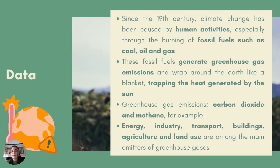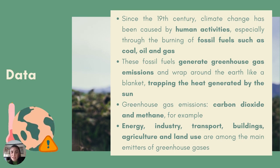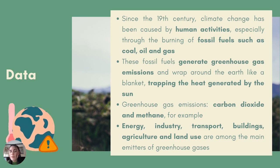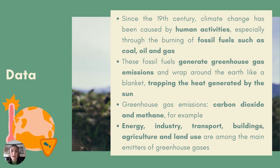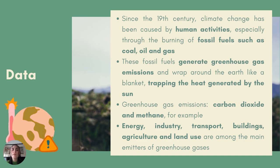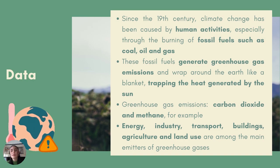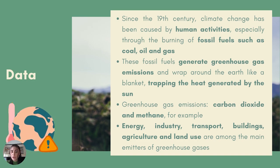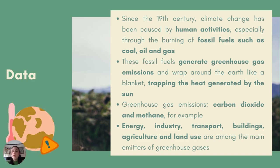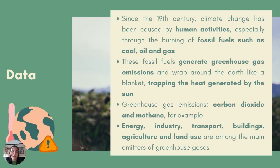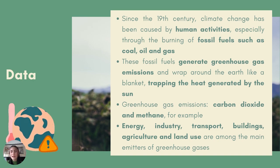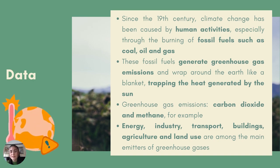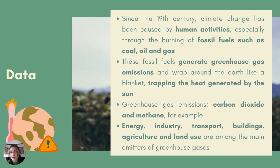These changes in temperatures can occur naturally, caused, for example, by variations in the solar cycle. But since the 19th century, climate change has been caused by human activities, especially through the burning of fossil fuels, such as coal, oil, or gas. The burning of these fossil fuels generates greenhouse gas emissions. These gases wrap around the Earth like a blanket, trapping the heat generated by the sun and raising the Earth's temperatures.